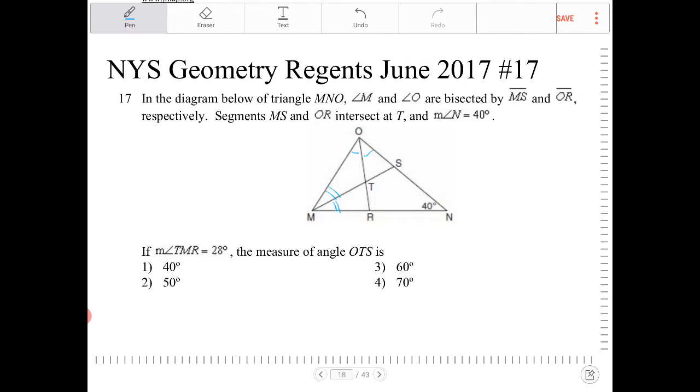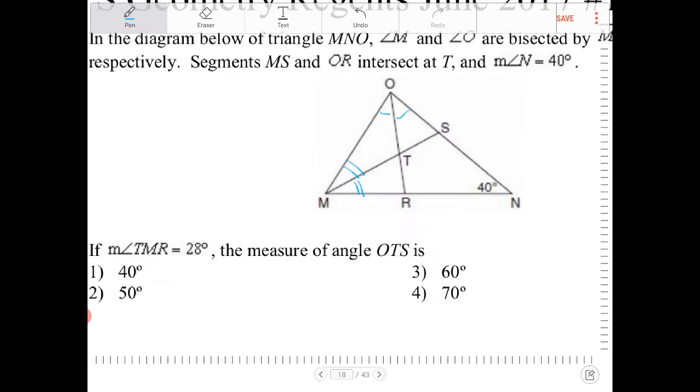Angle N is equal to 40 degrees. That's already labeled for us. Angle TMR is equal to 28 degrees. TMR is 28, so let me just draw that in. So this is 28. So if that's 28, then that means this is 28.